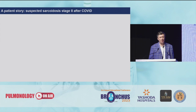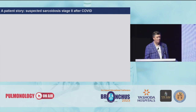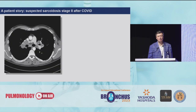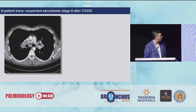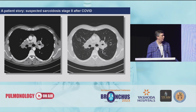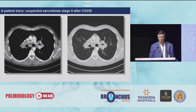I want to start from a patient. A patient's story of suspected sarcoidosis after COVID. You see here on a chest CT in a mediastinal window, a huge lymphatic node, mostly in the hilar regions, and the subcarinal lymph node is a bit enlarged. In a parenchymal window, the patient has some infiltration and ground glass opacity in the right middle lobe.